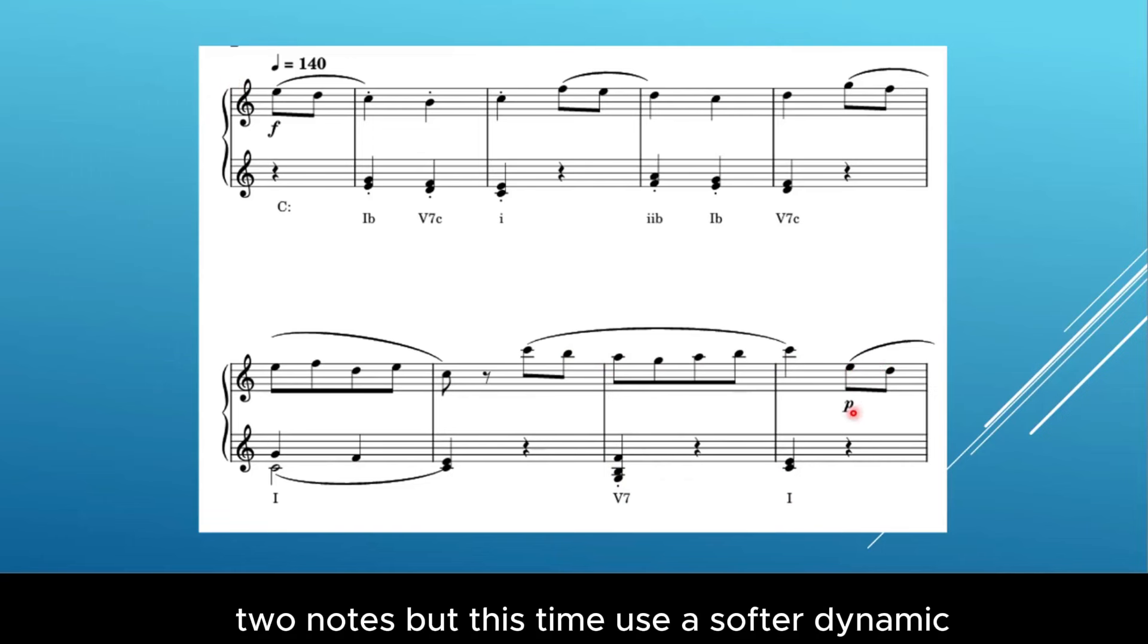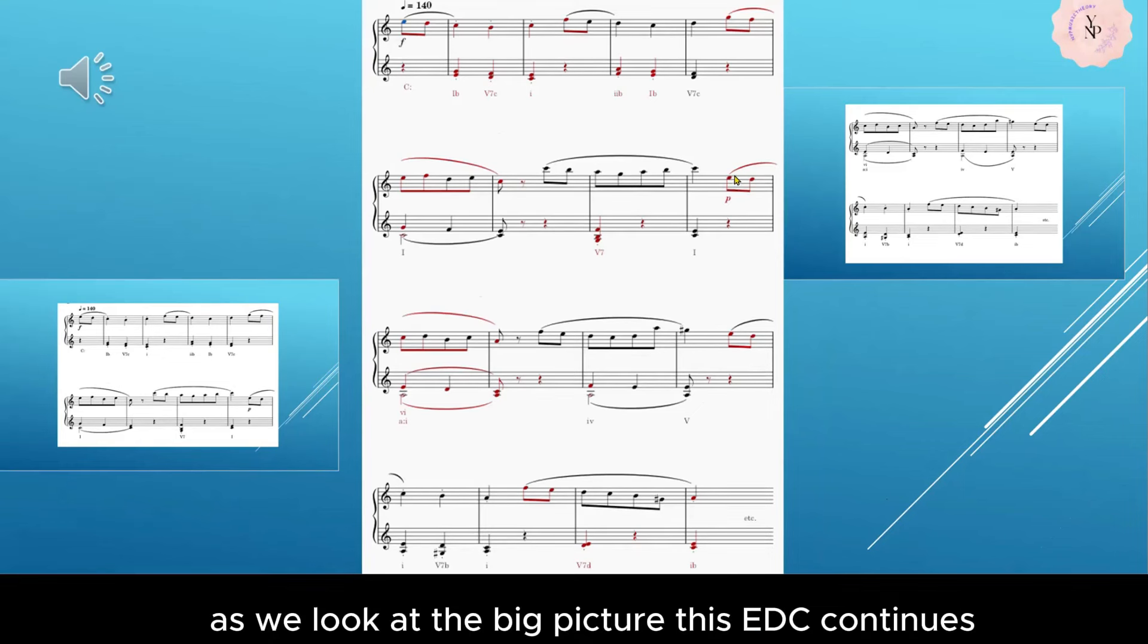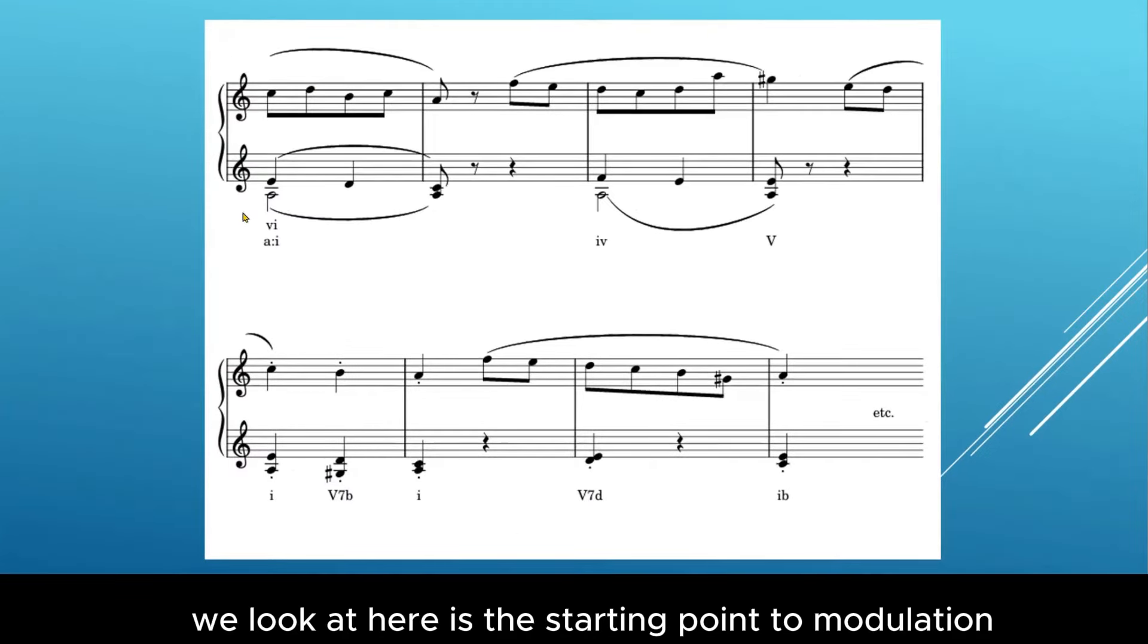As we look at the big picture, this E D C continues and the rhythmic pattern resembles the second line. Let's look into the details. Here is the starting point, to modulation. We take the A minor chord here, A C E, which is a sixth chord in C major, equivalent to A minor one chord. So this is a pivot chord. And again the re and the ti, that is D and B, are changing notes. A C E are the chord tones, and this D is a passing note.